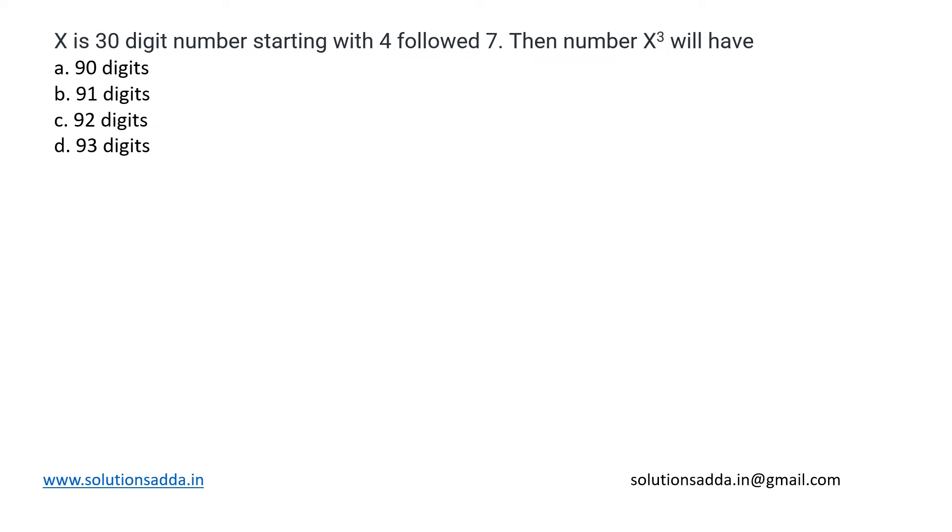This is a mathematics question based upon precision rules. A number X has been given which has 30 digits. It starts with 4 and is followed by all 7s up to 30 digits. We need to determine the number of digits that X³ will have. It's not possible to manually calculate this or even with a calculator because that's a 30-digit number and we need to take its cube.